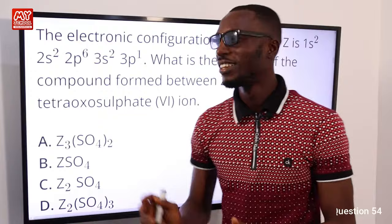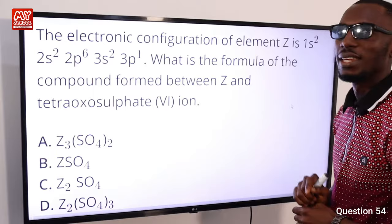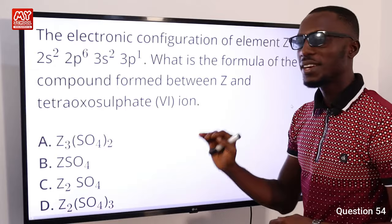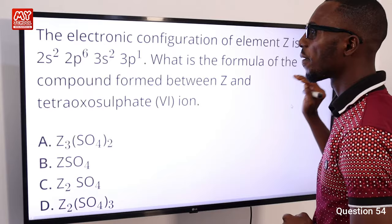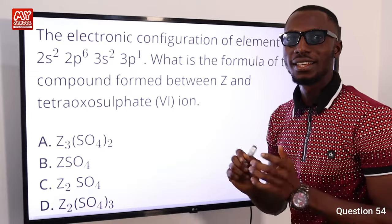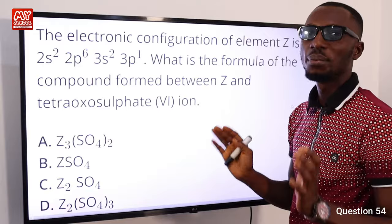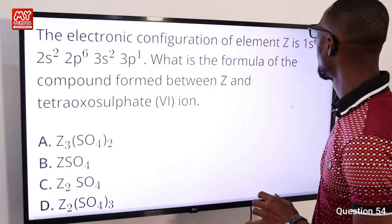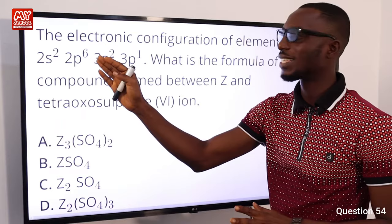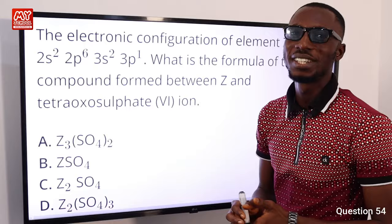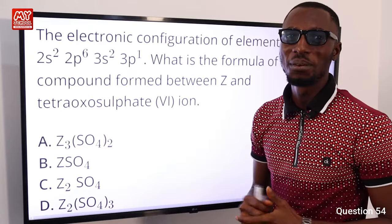Question 54: The electronic configuration of element Z is 1s² 2s² 2p⁶ 3s² 3p¹. Adding up: 2+2+6+2+1 = 13, so Z has atomic number 13 — that is aluminium. Now aluminium combines with the tetraoxosulfate(VI) ion, which has a charge of −2.